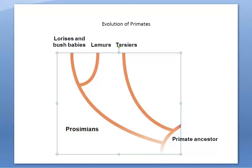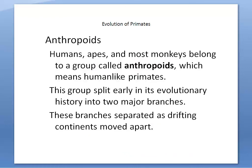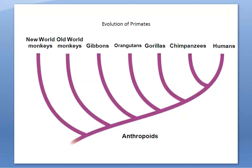Our next group is the anthropoids, which includes a much larger group of primates. Humans, apes, and most monkeys belong to the anthropoids — which just means 'human-like primates.' This group split early in its evolutionary history into two major branches, separated as the drifting continents moved apart, similar to how mammals diversified overall.